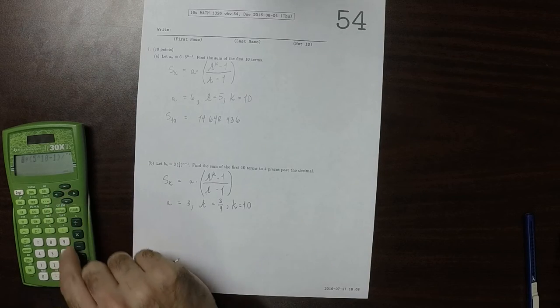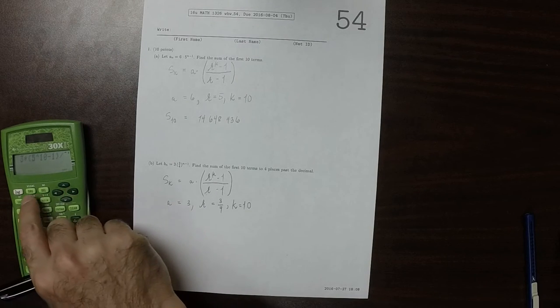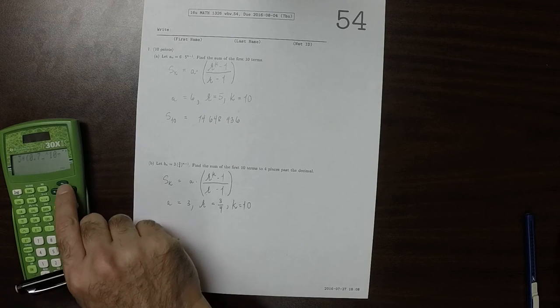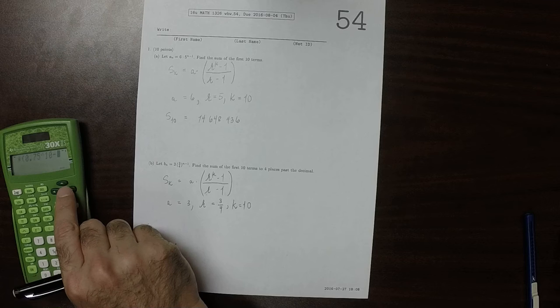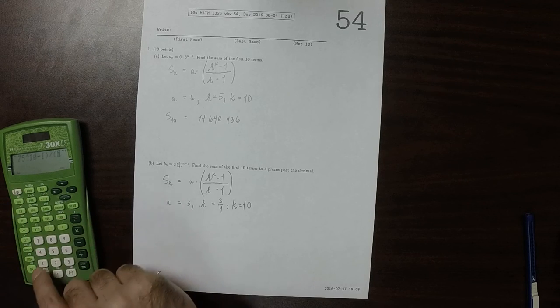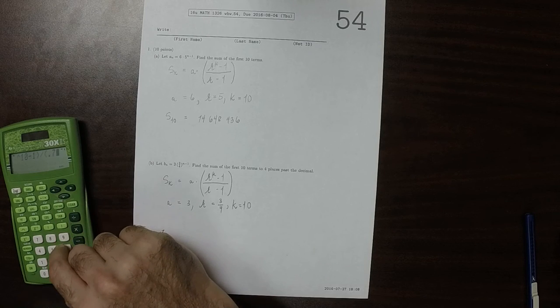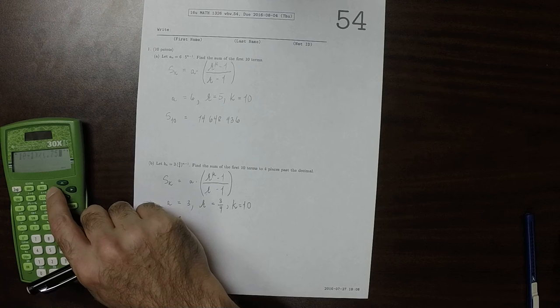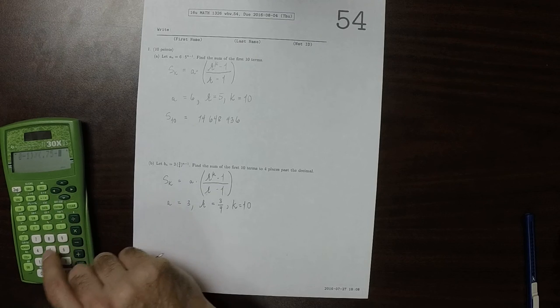So that'd be 3 times 0.75, because that's 3 fourths, to the 10 minus 1, divided by 0.75 minus 1.